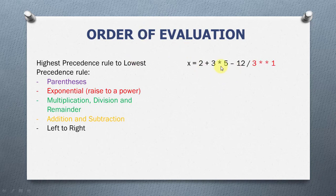In this numeric expression, we have 2 plus 3 times 5 minus 12 divided by 3 raised to the power of 1. So, what is Python going to calculate first? Looking at the numeric expression, we see that we have the addition operator, the multiplication operator, subtraction operator, division, and exponential. Which of these rules has the highest precedence? That would be the exponential. We will evaluate the exponential first.